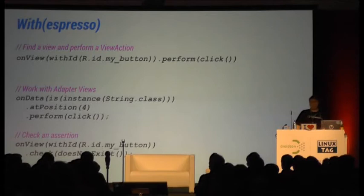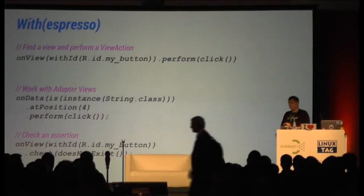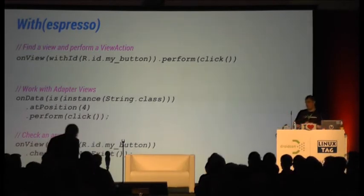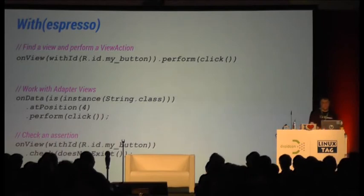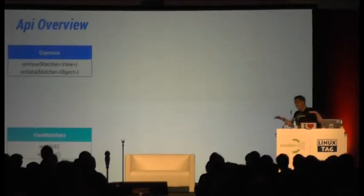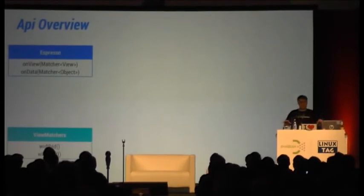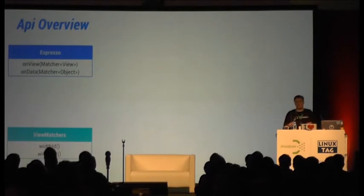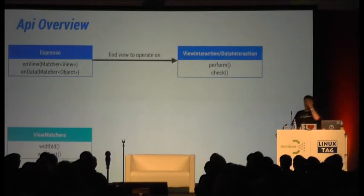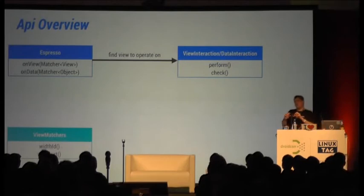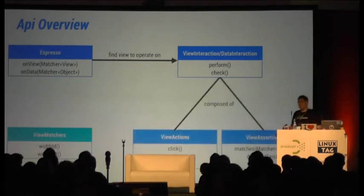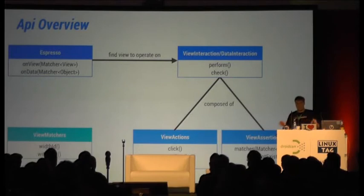The other thing you want to do with Espresso is check assertions, and for this we have view assertions. It works in the same way as matching views and performing view actions. Looking at the API from a high level, we have two main entry methods — onView and onData — and we use view matchers to define the view we want to operate on, which returns a ViewInteraction or DataInteraction. From those interactions we can either perform a view action or check an assertion.